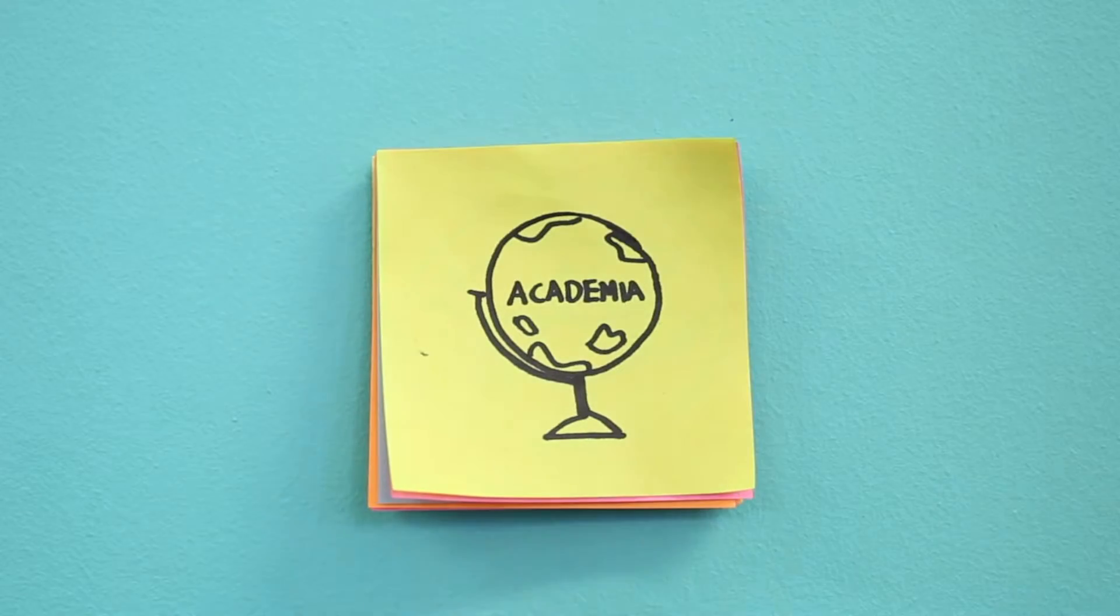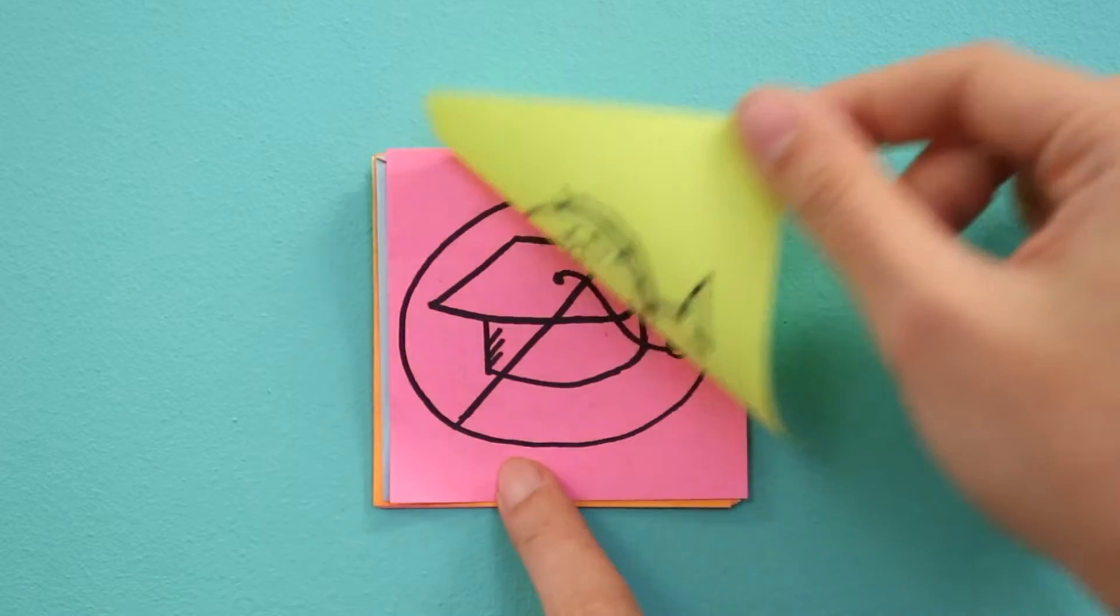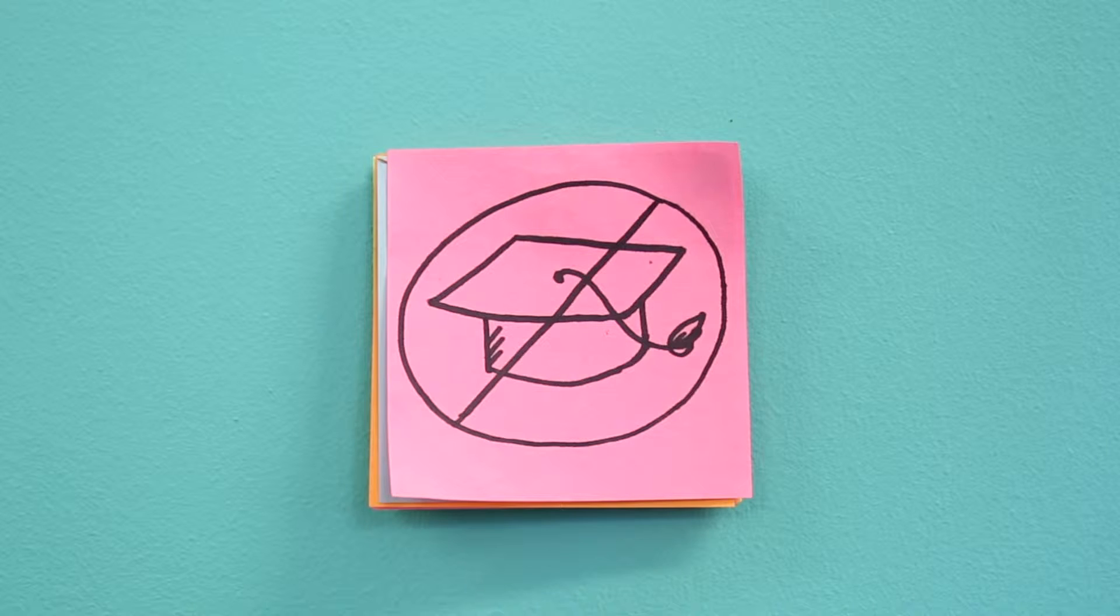A large portion of the written knowledge in the world today is blocked from the average person behind a large paywall. That paywall is called an academic publisher.